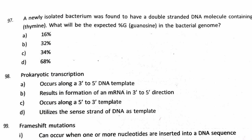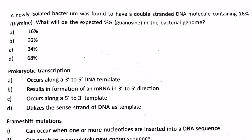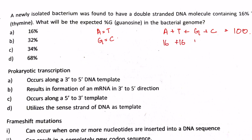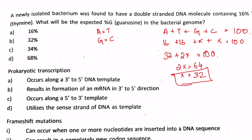Next question: a bacterium has double-stranded DNA containing 16% thymine. What is the expected percentage of guanosine? Using the rules A = T and G = C, and A + T + G + C = 100: 16 + 16 + x + x = 100, so 32 + 2x = 100, giving 2x = 68 — wait, x = 34. Actually with T = 16%, A = 16%, so G + C = 68%, meaning G = C = 34%. Answer: 34%, option B.